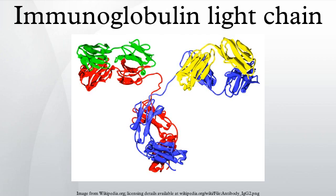The immunoglobulin light chain is the small polypeptide subunit of an antibody. A typical antibody is composed of two immunoglobulin heavy chains and two Ig light chains.